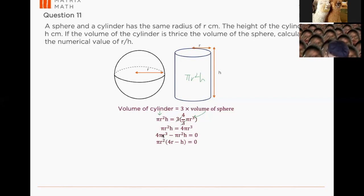So I will have 4r minus h equals to 0. So once I see this, I'm very happy because I can say πr² equals to 0, or 4r minus h equals to 0.